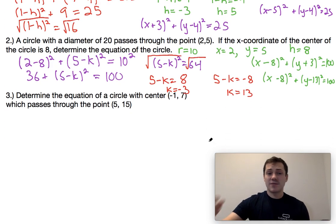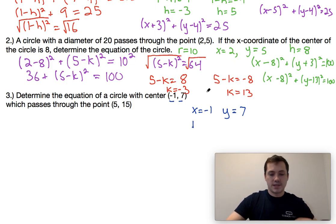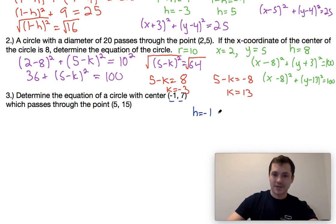For the last one, slightly different. We're not given the radius in this case, but I actually find these ones a little bit easier to solve. So the center of the circle is negative 1, 7, which means h is negative 1 and k is equal to 7. If it passes through the point 5, 15, we know x is equal to 5 and y is equal to 15.